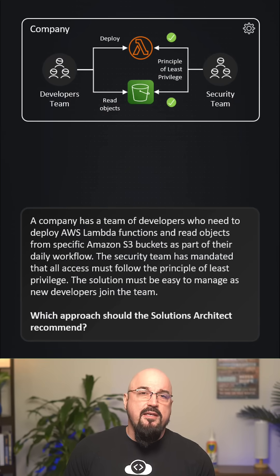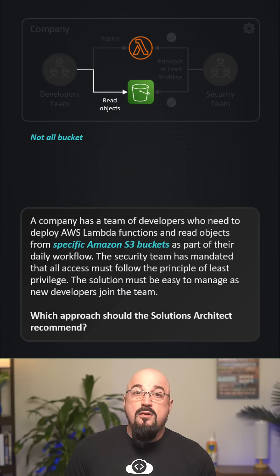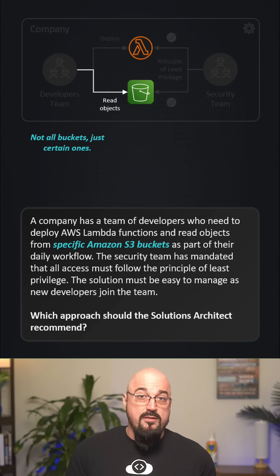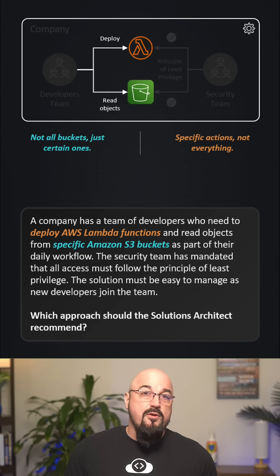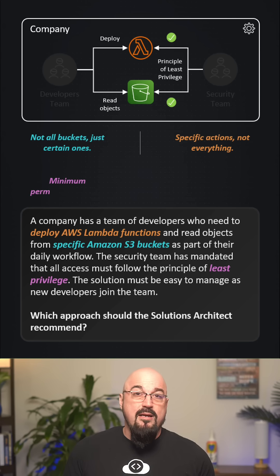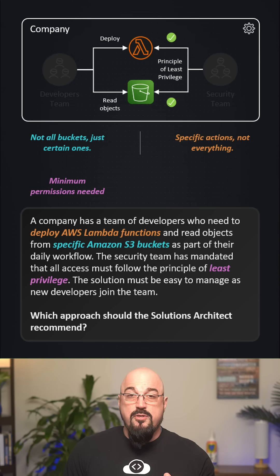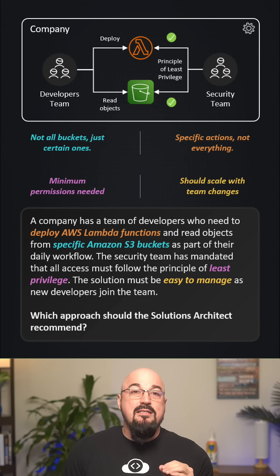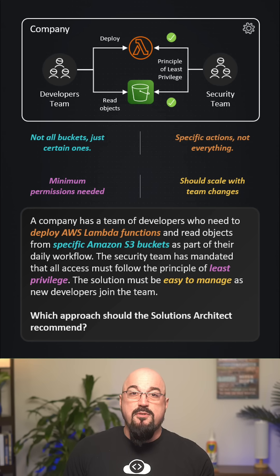Let's identify the key hints. One: specific S3 buckets — not all buckets, just certain ones. Two: deploy Lambda functions — specific actions, not everything. Three: least privilege — minimum permissions needed. And four: it must be easy to manage and scale with team changes.